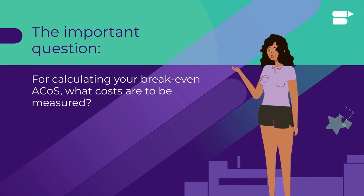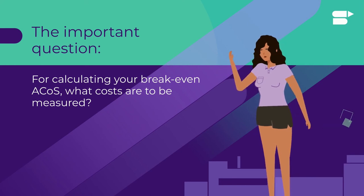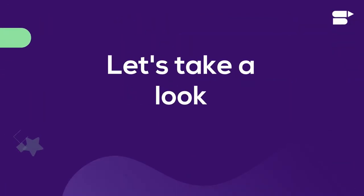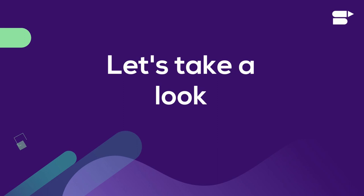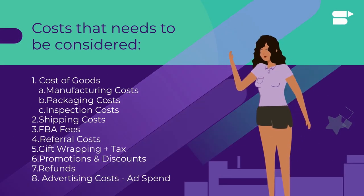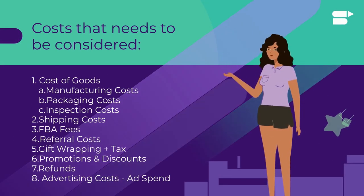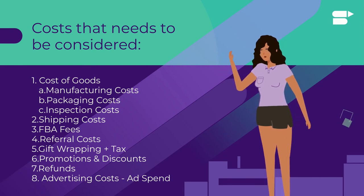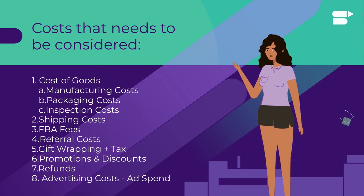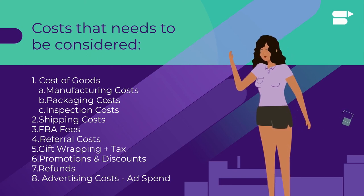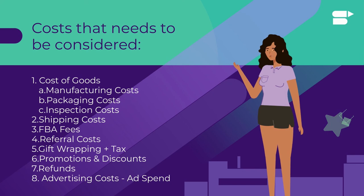At this point, a question sellers probably have in mind is: for calculating your break-even ACoS, what costs need to be measured? Let's take a look. The cost of goods includes the manufacturing cost, packaging cost, and inspection cost. Other costs include shipping costs, FBA fees, referral cost, gift wrapping and taxes, promotions and discounts, refunds, and advertising costs which includes the ad spend.